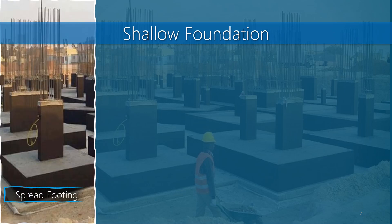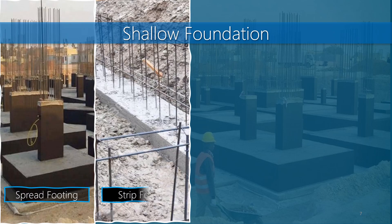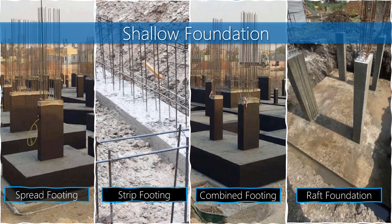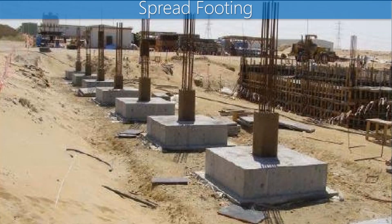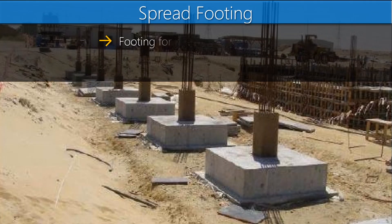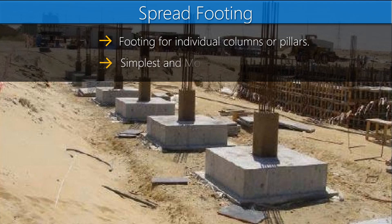The most common shallow foundations include isolated spread footing, strip or wall footing, combined footing, and raft or mat foundation. The first type is isolated spread footing — this is your go-to for individual columns or pillars, and it's the simplest and most economical choice.